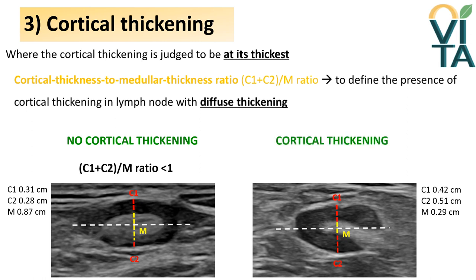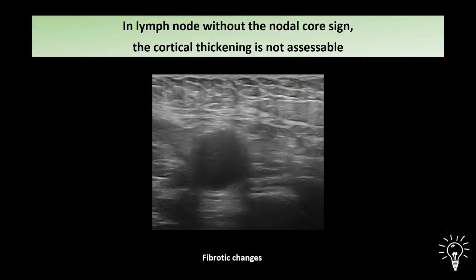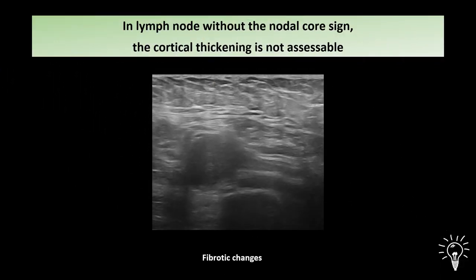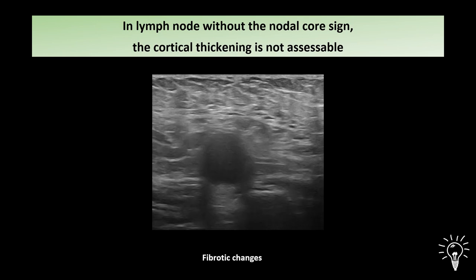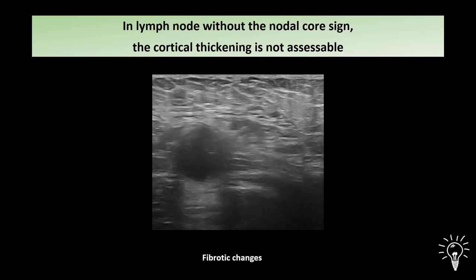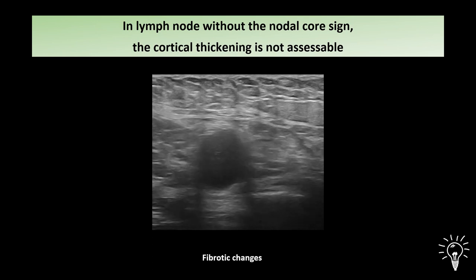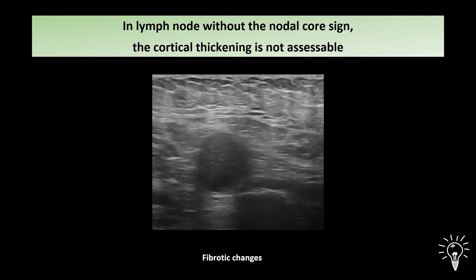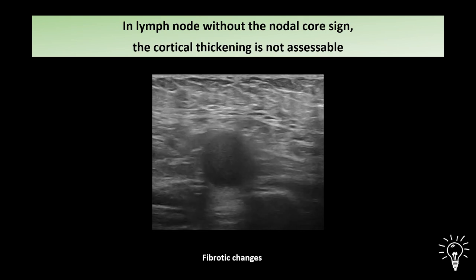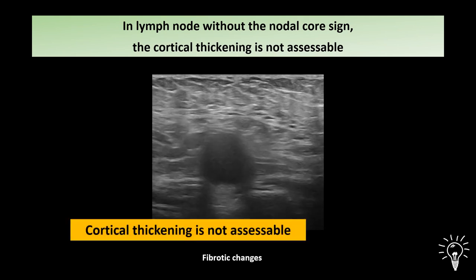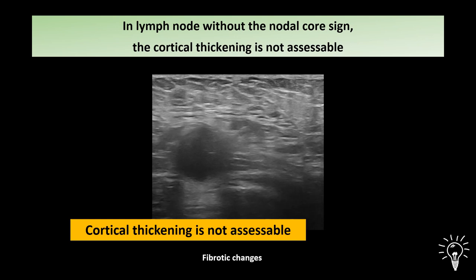On the contrary, cortical thickening is present when the cortex is equal to or wider than the medulla. Since the presence of the core sign is necessary for measurements and definition of cortical thickening, in the case of a lymph node with fibrotic changes where the medulla is absent, cortical thickening cannot be assessed.